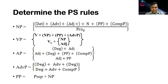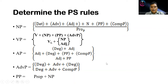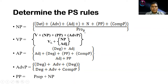This is just to remind you about the PS rules. A noun phrase is composed mainly of a noun, and the noun can be accompanied by other elements including determiner, adverb, adjective, prepositional phrase, and complement phrase. All these elements can be replaced by a personal pronoun, so NP can be composed of only a personal pronoun.